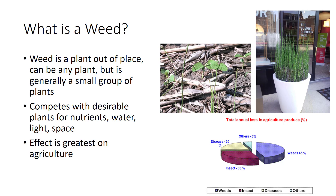Weeds are an important factor in the management of all land and water resources, but their effect is greatest on agriculture. The losses caused by weeds exceed the losses caused by any other category of agricultural pests. Of the total annual loss in agricultural produce, weeds account for 45 percent, insects 30 percent, disease 20 percent, and other pests 5 percent.